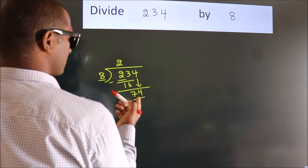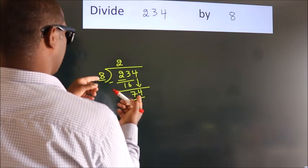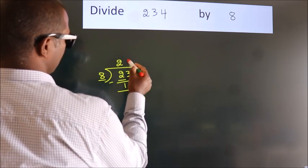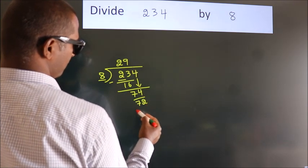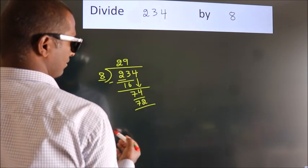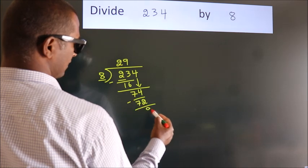A number close to 74 in the 8 table is 8 nines, 72. Now we subtract. We get 2.